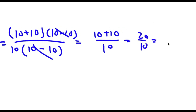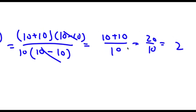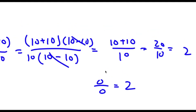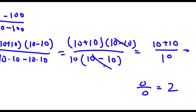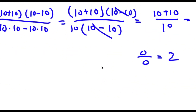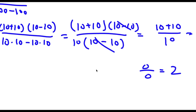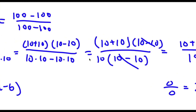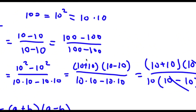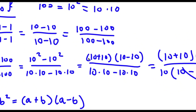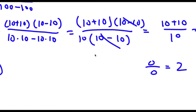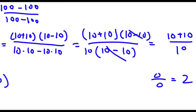Now 10 + 10 is 20, so I have 20 over 10, which is simply equal to 2. So I have just proved that 0 over 0 is equal to 2. Now I'm going to let you guys pause the video and look back to find out where I made my mistake.